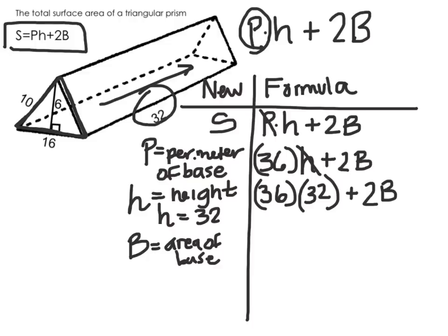To find the area of that base, I'm going to use the area of a triangle formula: 1 half base times height. 1 half, 16, I'm going to put that in parentheses, times the height of 6.